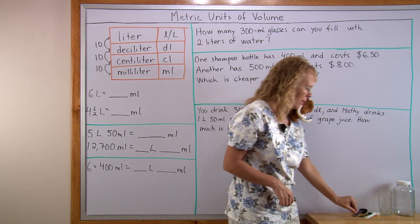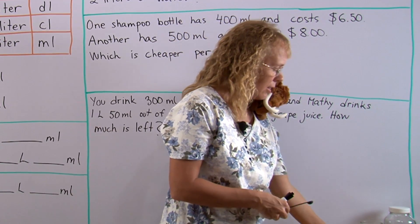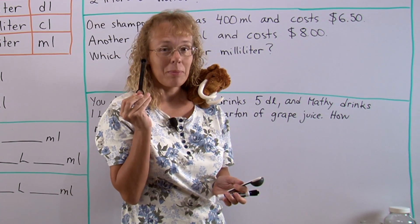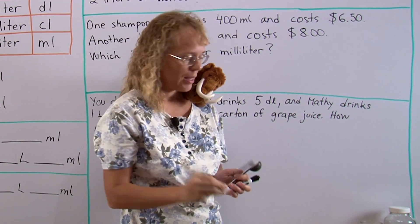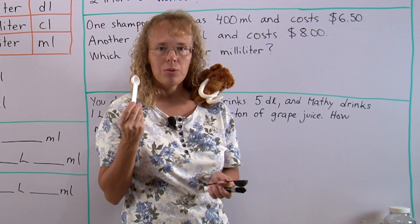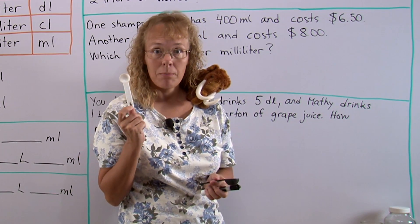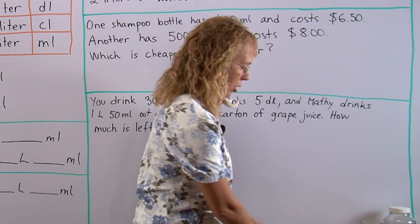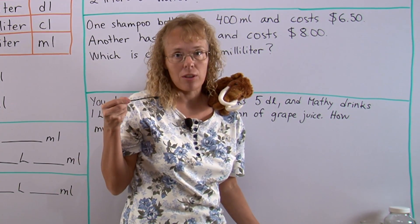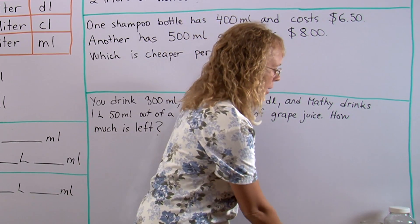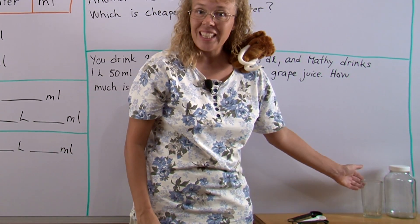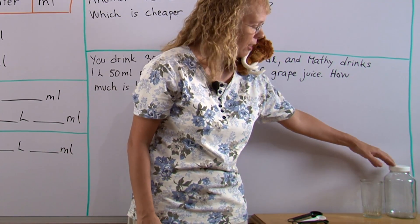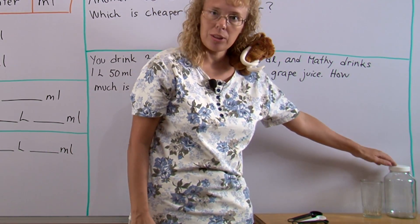I have a few examples here. First of all, these little measuring spoons — this is about one milliliter. Here is one teaspoon which is 5 milliliters, and here is a tablespoon which is 15 milliliters. As you can see, a milliliter is a fairly small unit, it's not very much. This glass is about 300 milliliters, and then this is a liter — one liter jar — so this is 1000 milliliters.